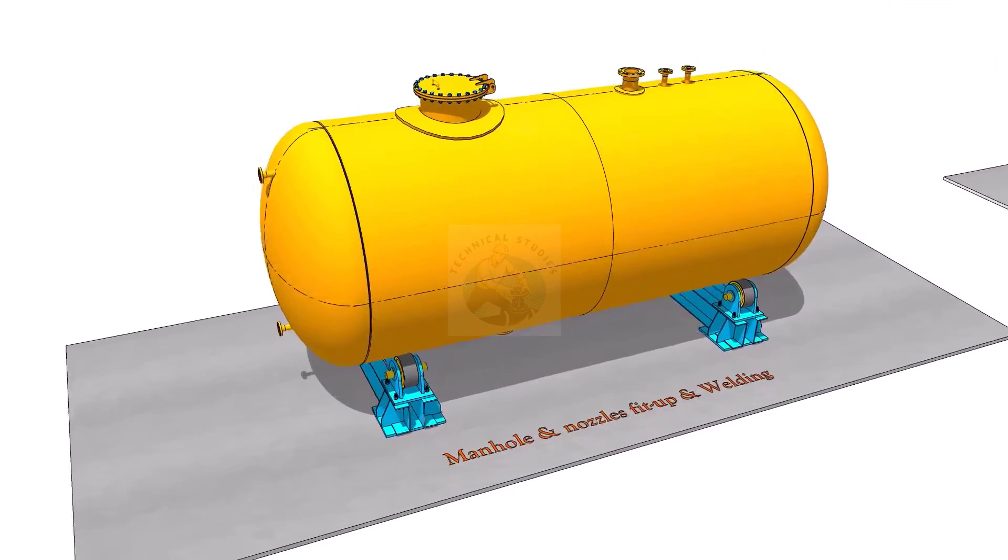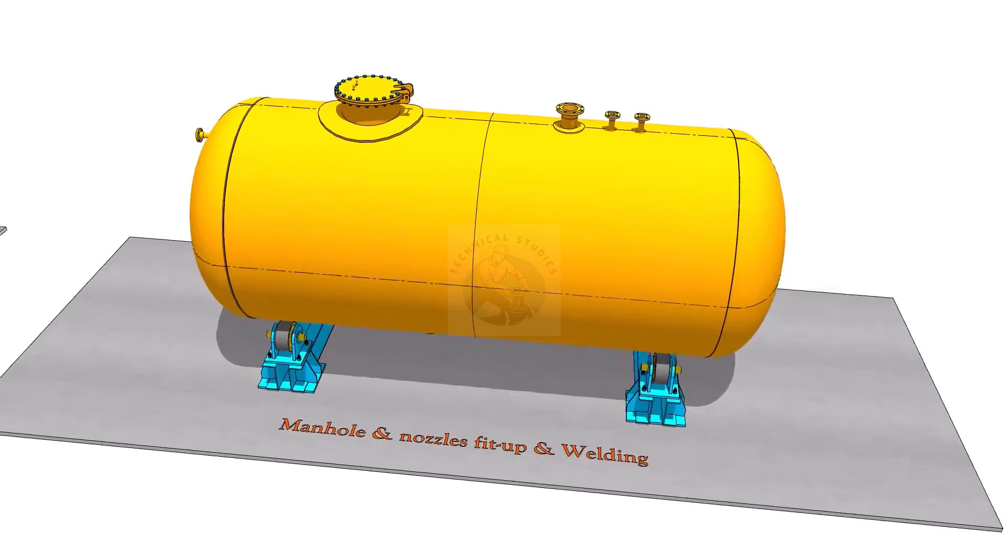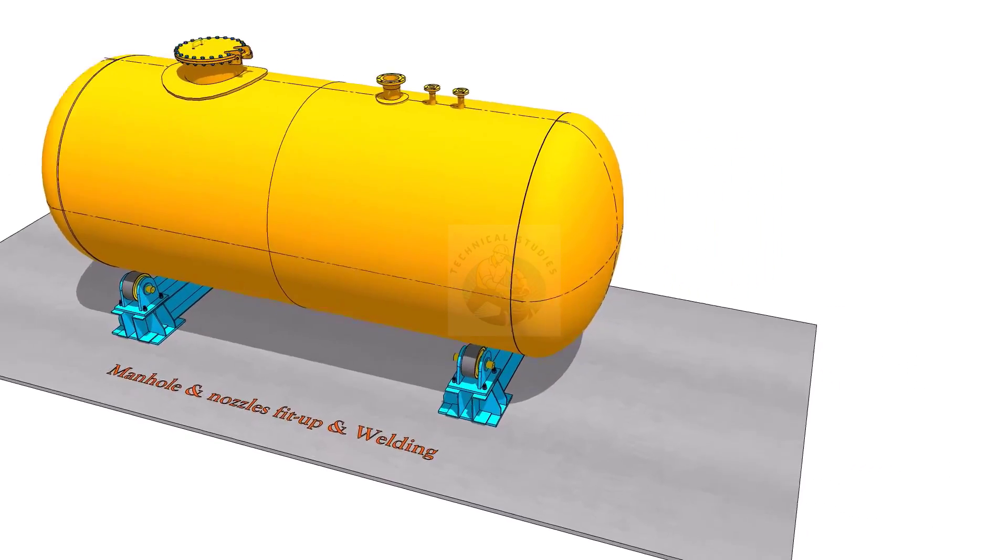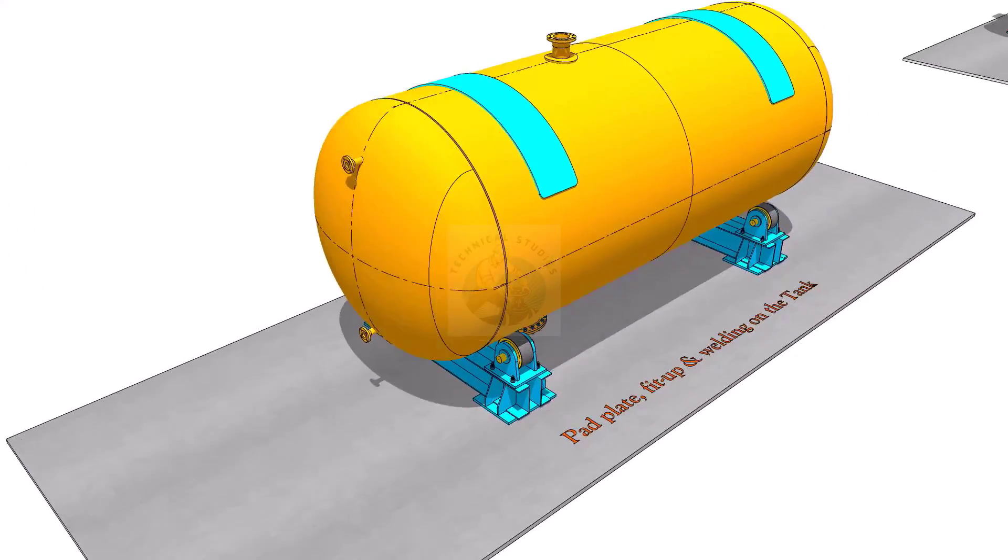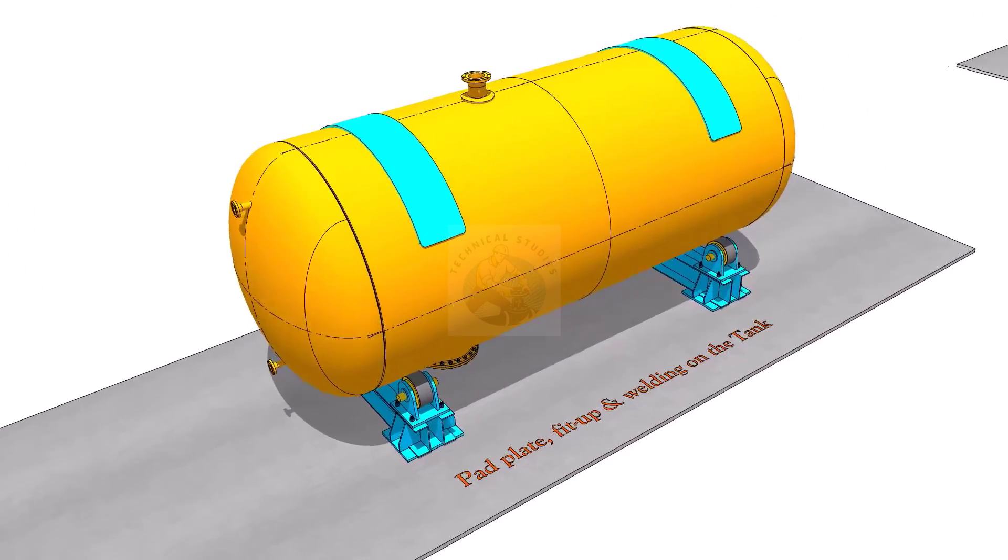Fit up and weld the dish ends on both ends of the shells. Install the pad plates, but do not weld.